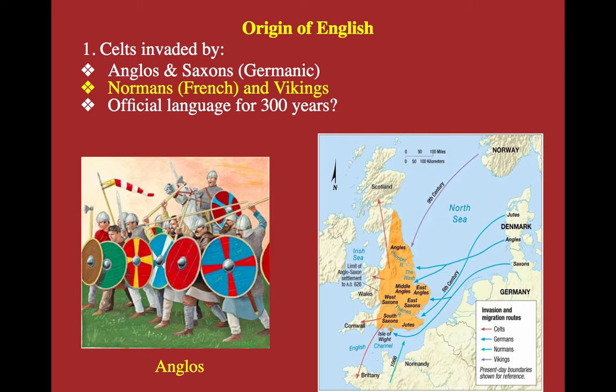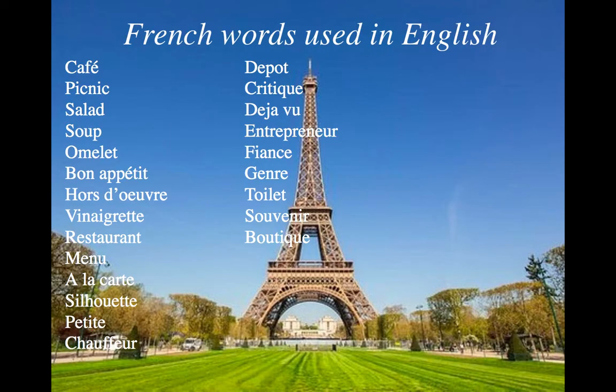The origins of English are this: the United Kingdom was invaded by multiple groups. Early on it was the Angles and the Saxons, Germanic tribes from northern Germany as you can see on the map. The Normans, who were French, and the Vikings, who came from Norway and Denmark. These are all going to be combined and mixed together to produce English. The United Kingdom was not always a superpower — in fact, their official language for 300 years was French, which is why we have so many words in English tied to French.